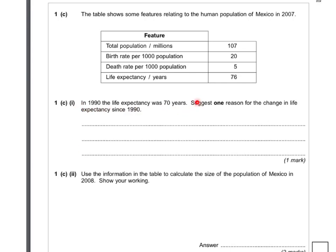In 1990, the life expectancy was 70. The question asks for one reason — it's in bold, so don't do any more than one — why the life expectancy has increased to 76 since 1990, so in those 17 years.